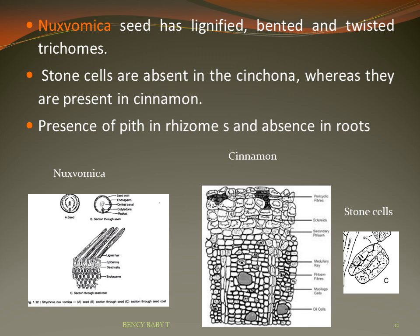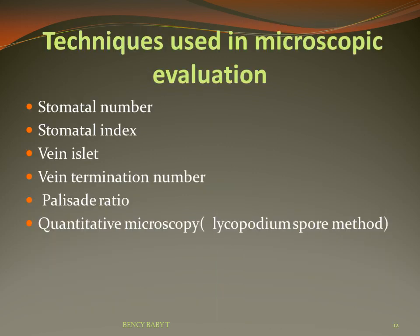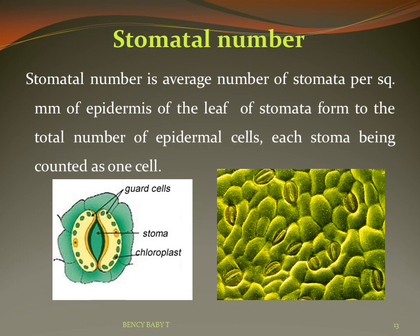Pith is present in rhizomes but absent in roots. Stomatal number is defined as the average number of stomata per square millimeter of the epidermis of the leaf. The actual number may vary for leaves of the same plant grown in different environments or under different climatic conditions, and it also varies with species.